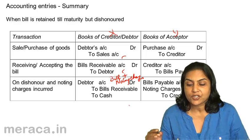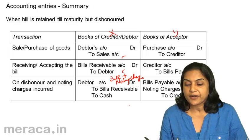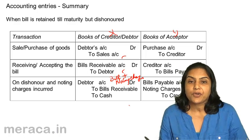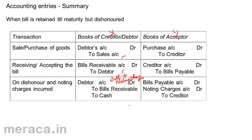What are the entries for these same transactions in the books of Y? On purchase of goods: purchase account debit to creditor. On accepting the bill: creditor's account debit to bills payable. On dishonour with noting charges incurred — Y is responsible for the dishonour, so noting charges are an expense in Y's books. The entry becomes: bills payable account debit 10,000; noting charges account debit 200; to X's account 10,200. Since X has to be paid 10,000 (value of the bill) plus 200 noting charges that X has paid.